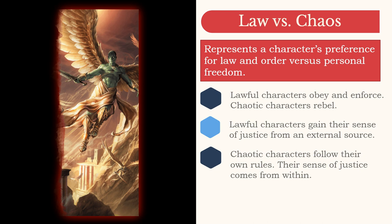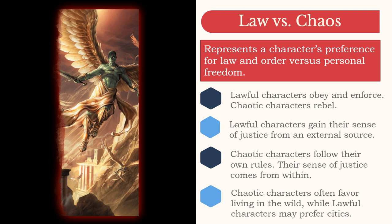If your sense of right and wrong comes from clearly defined rules, such as a government's regulations, a personal code of honor, or a church's laws, then you're probably lawful. If your sense of right and wrong comes from within, regardless of any rules or laws, then you're probably chaotic. Also, chaotic characters often favor living out in the wild amongst nature, while lawful characters may prefer living behind the walls in the structure of a city.